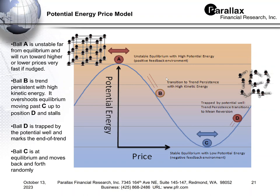When it finally does break — and A would be a critical point — it can go either running up in price very quickly or running down. That's point B, where you're transitioning to a very trend-persistent environment. C would be the place where it's at value — the new stable point where it rocks back and forth at a very low energy level. Point D is where the crowd overshoots equilibrium and reaches another critical point, an exhaustion of the move.